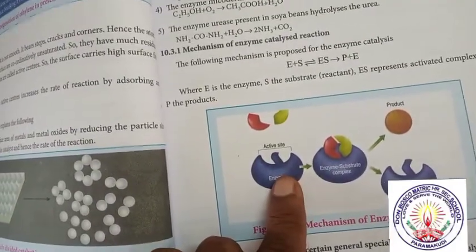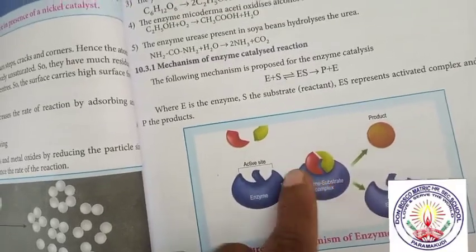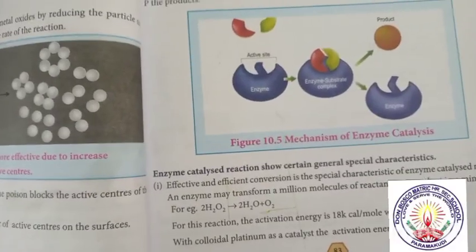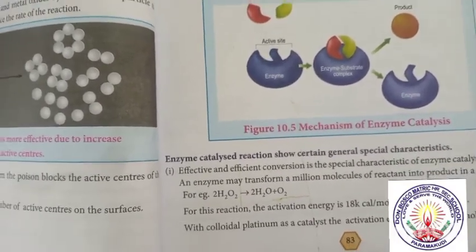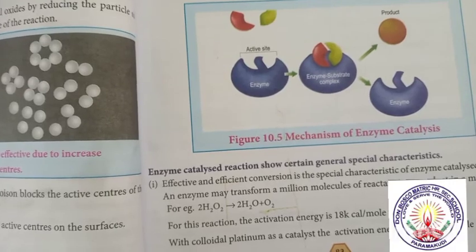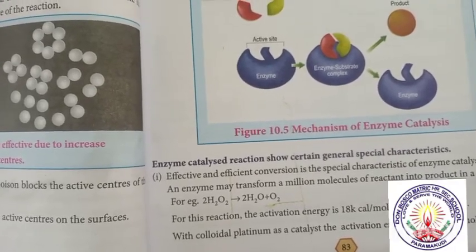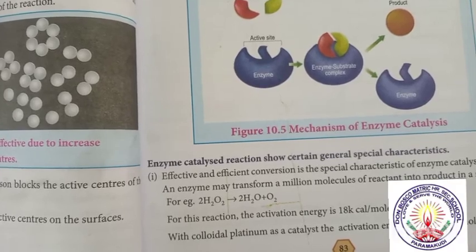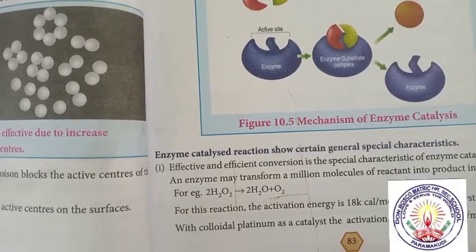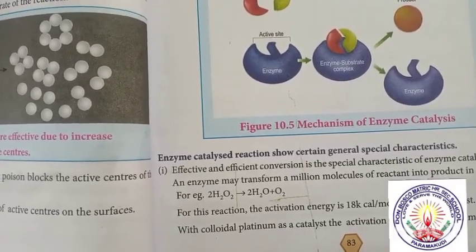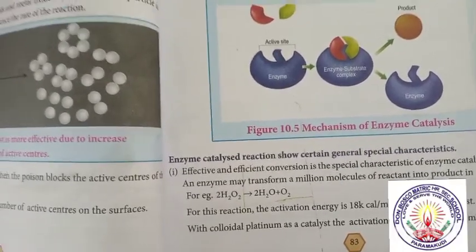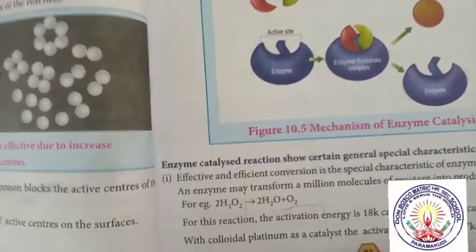The enzyme catalyzed reaction shows certain general characteristics. Effective and efficient conversion is a special characteristic — enzymes may transform a million molecules of reactant into product in a minute. For example, hydrogen peroxide gives H2O and oxygen. For this reaction, the activation energy is 18 kilocalories per mole without any catalyst. With colloidal platinum as a catalyst, the activation energy is 11.7 kilocalories per mole.